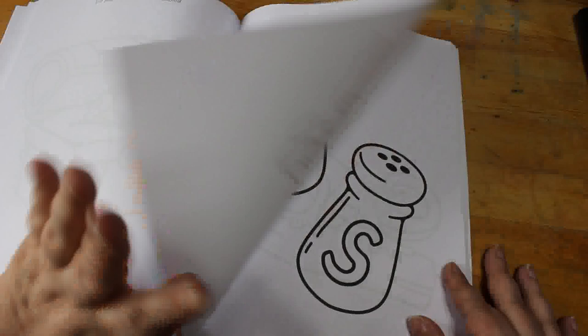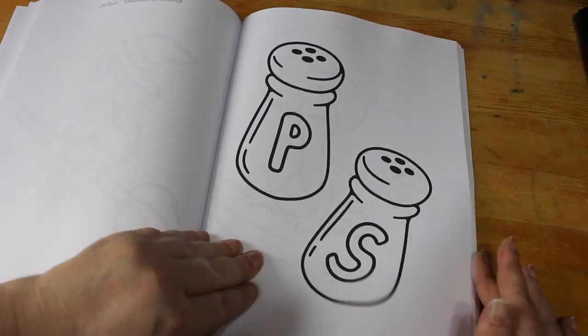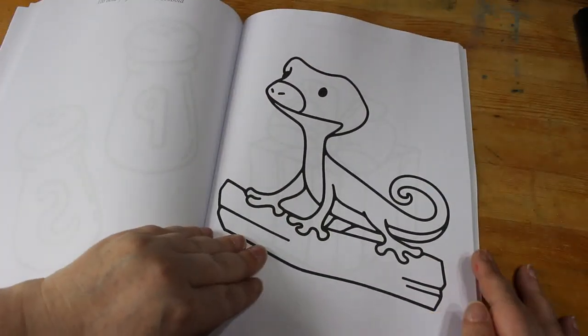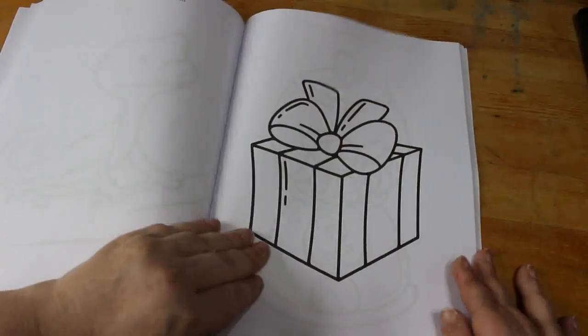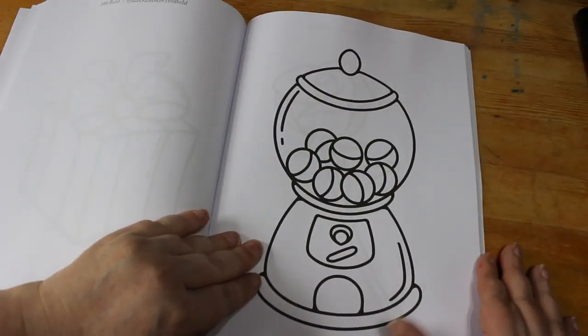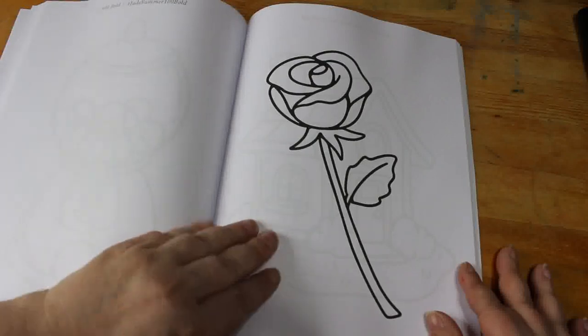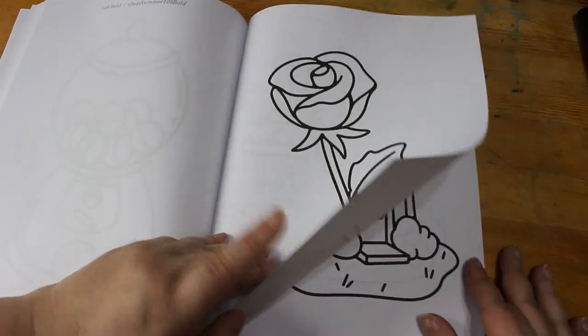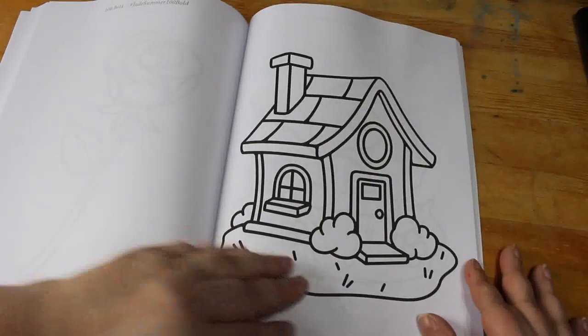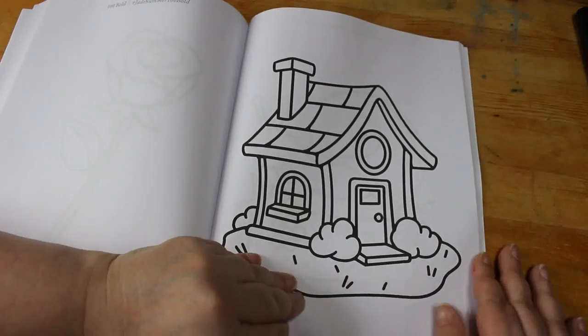A little witch, salt and pepper shakers, a gecko or lizard, a gift. So like I said they're very simple. That's quite a nice little gumball machine, a rose, little house. I keep knocking the tripod, I do apologize.